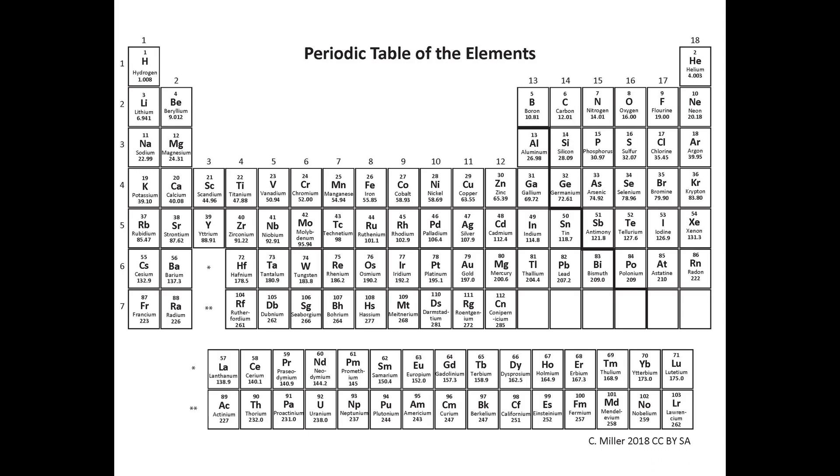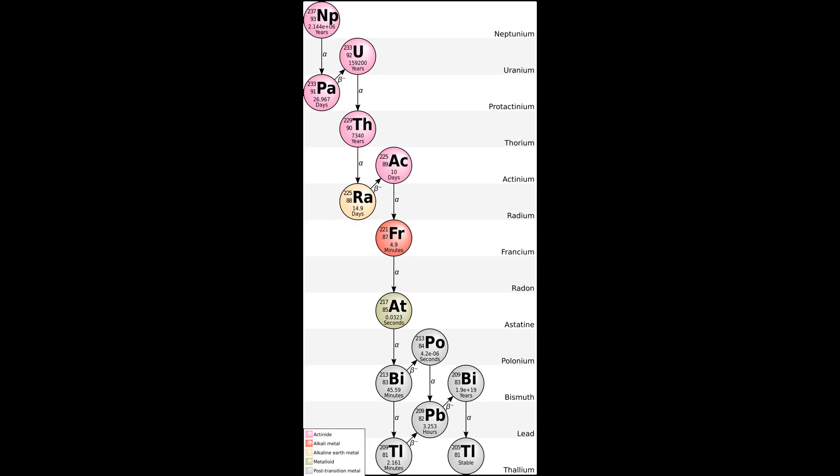Plutonium, atomic number 94, first synthesized in 1940, is another such element. It is the element with the largest number of protons, and equivalent atomic number, to occur in nature, but it does so in such tiny quantities that it is far more practical to synthesize it.